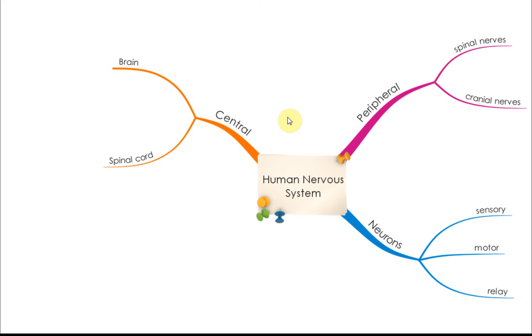Before this we have learned that the human nervous system consists of the central nervous system and the peripheral nervous system, and for the central nervous system we have the brain and the spinal cord.